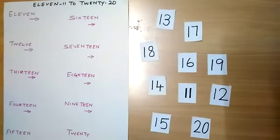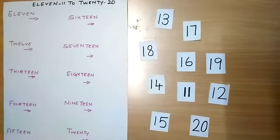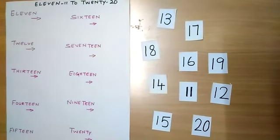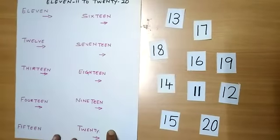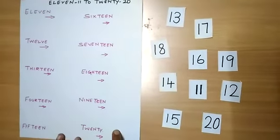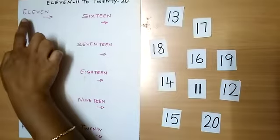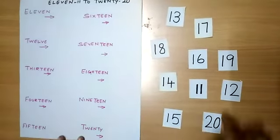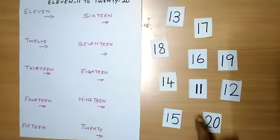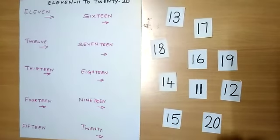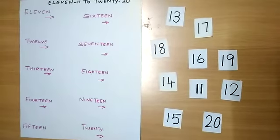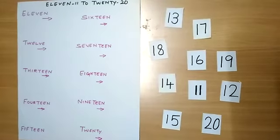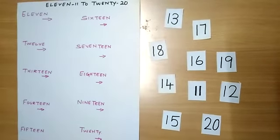Hello everybody. Today I am going to do a notation activity. For this activity I took a plain sheet. On the plain sheet I have written number names 11 to 20, and again on small papers I have written the numbers from 11 to 20. So the activity goes like this: I am going to spell the number name, and for the number name I am going to arrange the correct number.